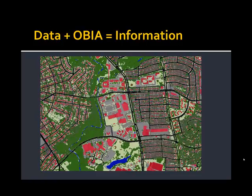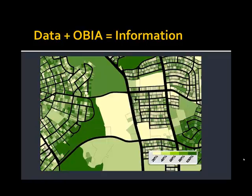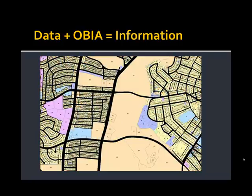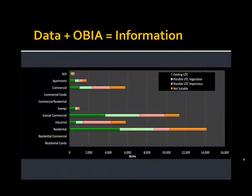By incorporating our cadastral records such as property parcel boundaries, we can then generate some very useful maps — such as this depiction of percent tree canopy per property parcel, or this one, which is the amount of land available for tree canopy for each property parcel. Of course, we can bring in cadastral land use records and then summarize the information in a way that's meaningful for decision makers.